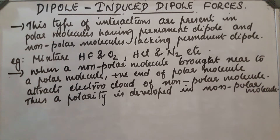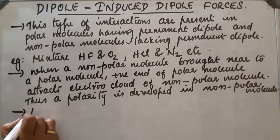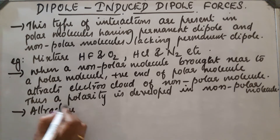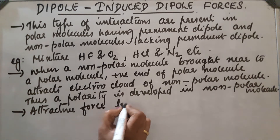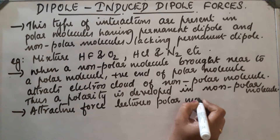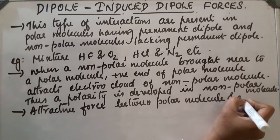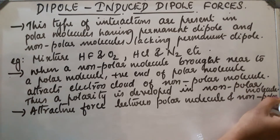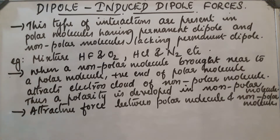We can say a dipole — there is an induced dipole in the non-polar molecule. Due to this, both become polar and an attractive interaction takes place between the polar molecule and the induced dipole of the non-polar molecule. So, an attractive force exists between the polar molecule and the non-polar molecule because the non-polar molecule now has an induced dipole, and both become attracted to each other.